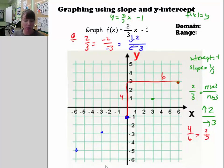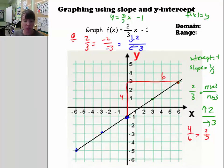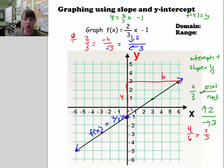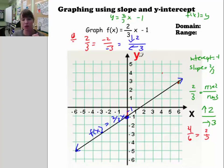When you graph, remember that you draw the line between the points, extending it as long as you possibly can. Put arrowheads on it, and also write the equation on it. So here I've graphed the line using slope-intercept form. That's why it's so nice — you just plot the y-intercept and use the slope to get other points.